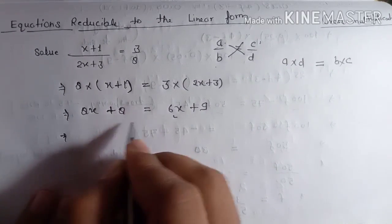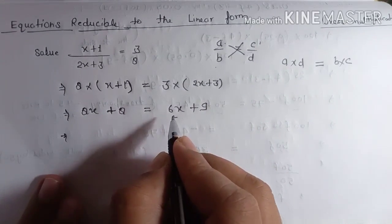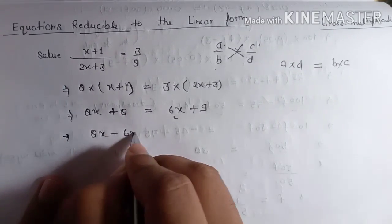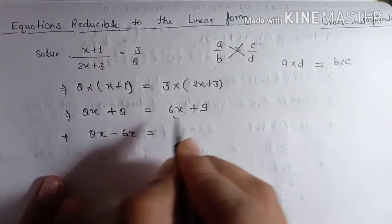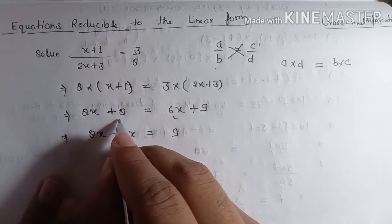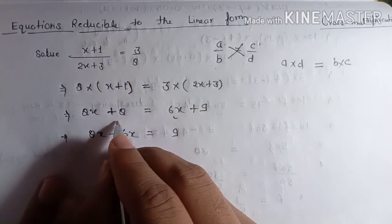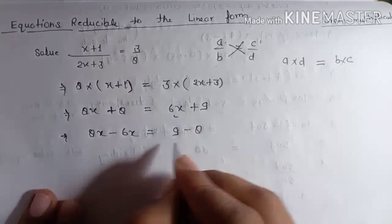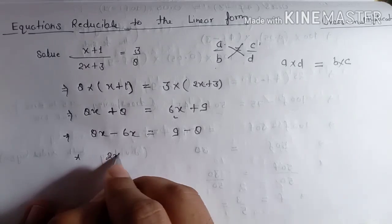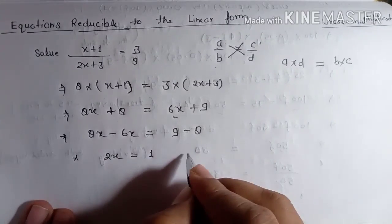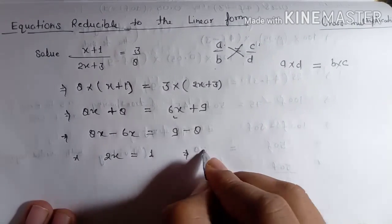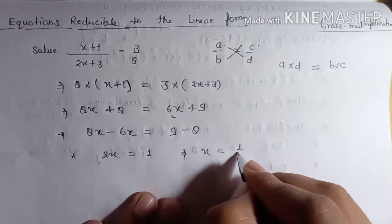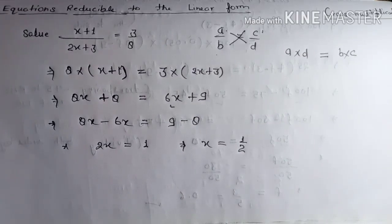Transpose six x to the left hand side: you will get eight x minus six x is equal to nine, and when you transpose this eight it will become minus eight. The result is two x is equal to one, so x is equal to one upon two.